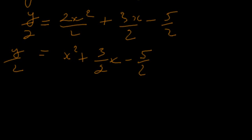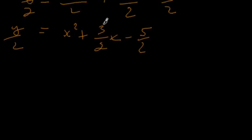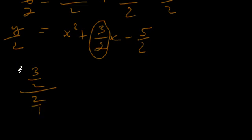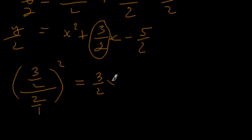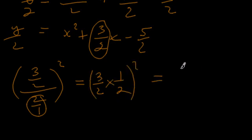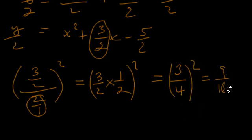The next step in completing the square, after getting rid of the factor in front of x squared, is to take the coefficient in front of x — which is 3 halves — divide it by 2, and square it. When dividing fractions, we take the top fraction, leave it as is, and invert the bottom fraction: 3 halves times 1 half gives us 3 fourths. Squaring 3 fourths: 3 times 1 is 3, 2 times 2 is 4, so 3 fourths squared gives us 9 over 16.